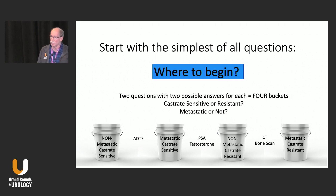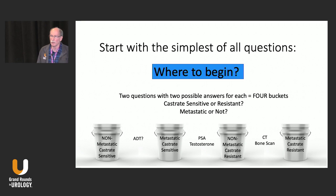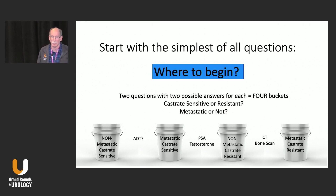What I'm going to do today is break this down. Not everybody in the room takes care of patients with APC or advanced prostate cancer, and I want to keep this at a level that everybody feels comfortable with. The burning questions I'm bringing today are the ones I get from colleagues. The first question, and really the simplest of all, is: where to begin? I can't stress enough how important it is to adequately categorize these patients into the four buckets.